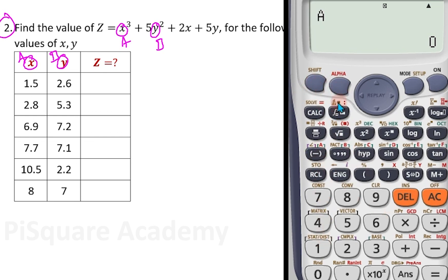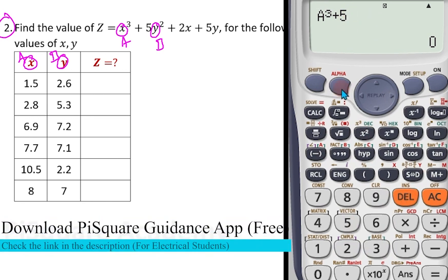Yes. Now, so let's program it. Alpha A, A cube. These are the reasons why people will not allow these programming calculators to the exams. This is a B square. Because Y is B. Plus 2 into A, plus 5 into B. Now, I should hit calc. It is asking for value of A. Value of A is 1.5. It is asking for value of B. Value of B is 2.6. The result is this. So, enter here 53.175.